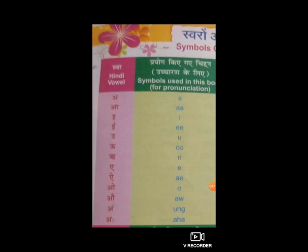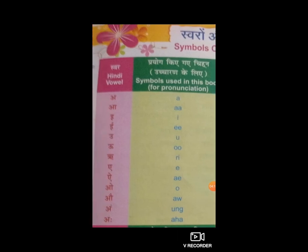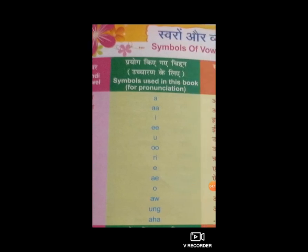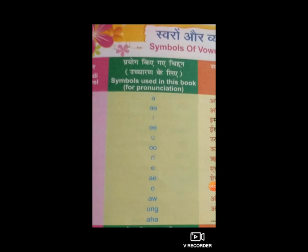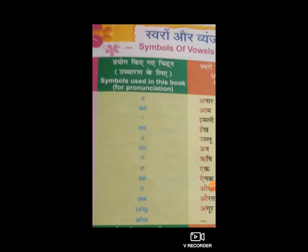ये उनके हिंदी words में प्रयोग के लिए किये जाने वाले English symbols हैं: A, double A, I, double I, U, double O, RI, A, AI, O, AW। इस तरह से सभी vowels के symbols याद करें।